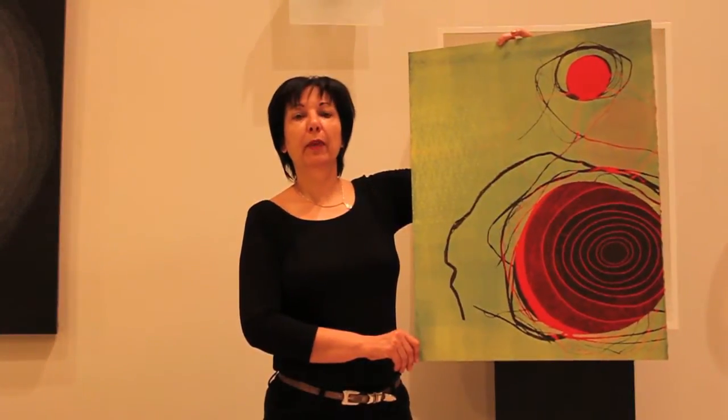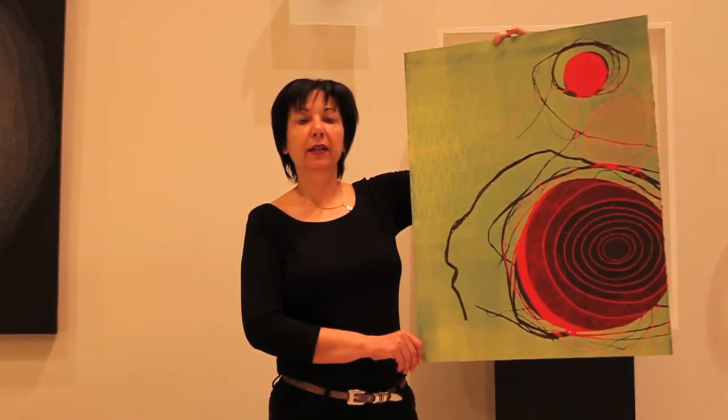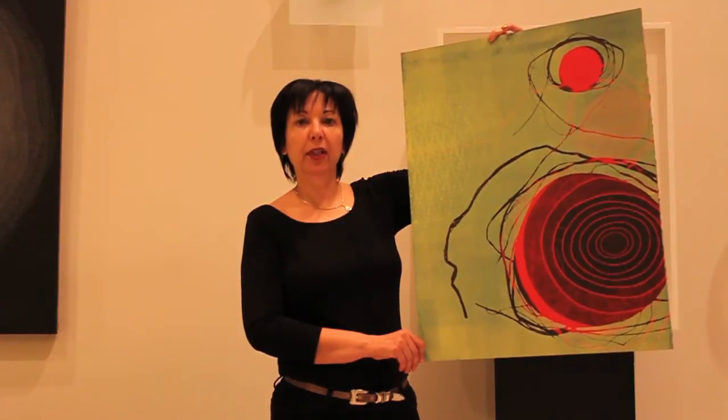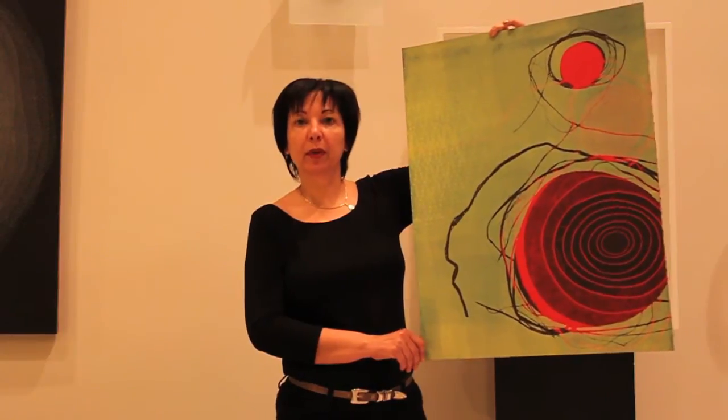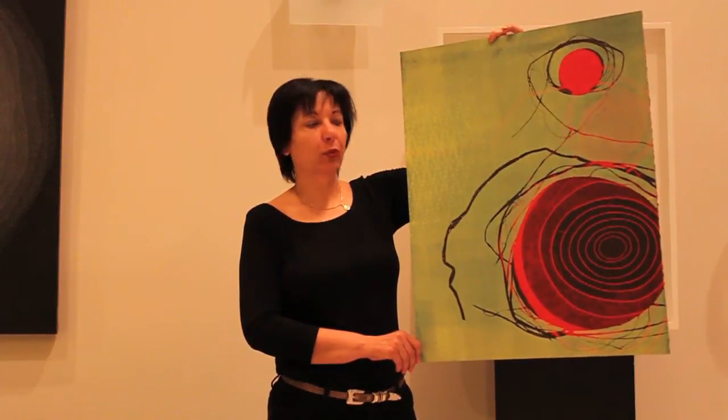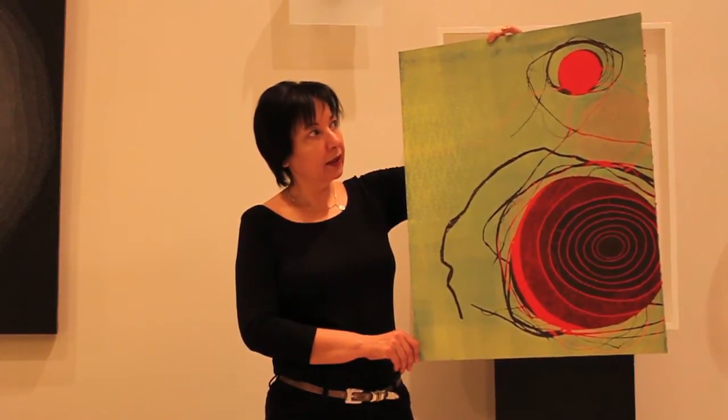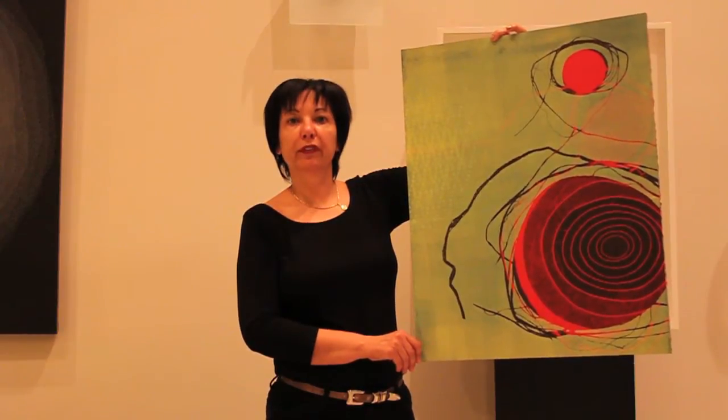The process of making a Monoprint is by applying inks over a plexiglass, manipulating the inks and then applying a paper or fabric over the plexiglass, running it through the press and then lifting up the paper to reveal the Monoprint.